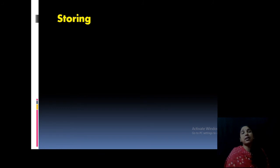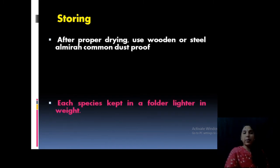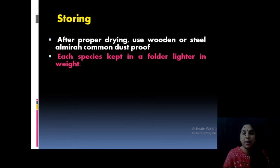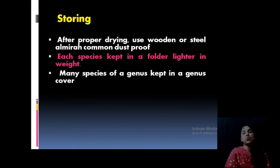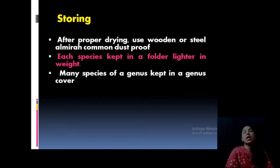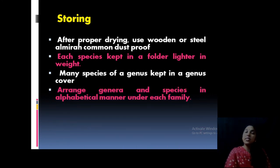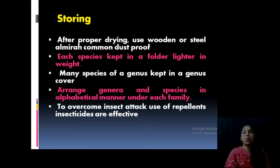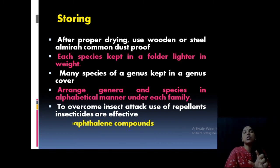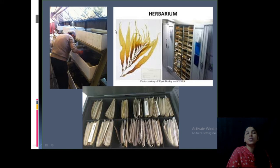After pressing and pasting, the sheets are ready to be stored. After proper drying, they should be stored in a wooden or steel almirah. Special folders are constructed — a folder should contain specimens for a genus. For example, all species of Sargassum are kept in the Sargassum genus cover. Genera and species are arranged in alphabetical order. Sometimes insects like cockroaches may attack, so you can apply insect repellents such as naphthalene compounds into the boxes.